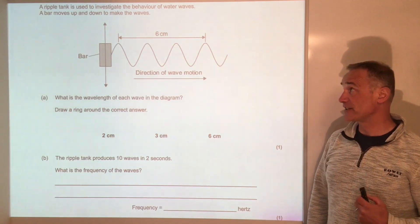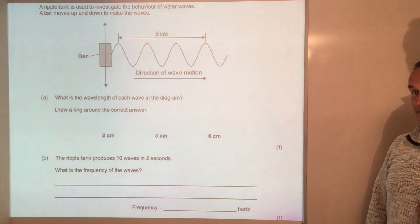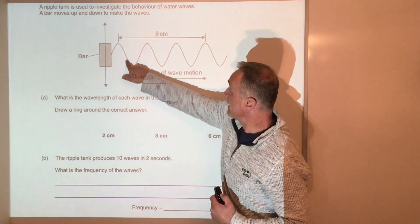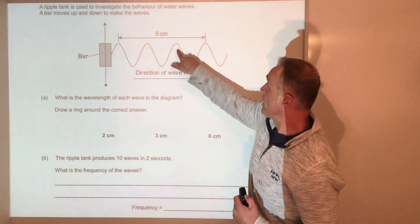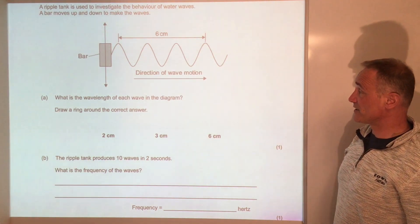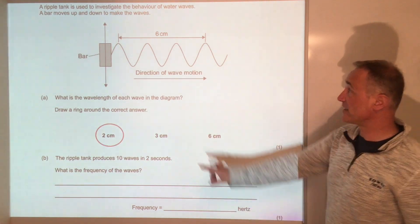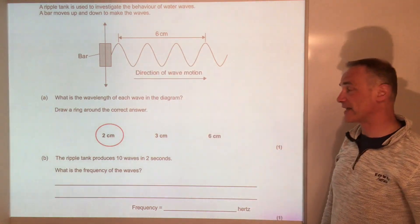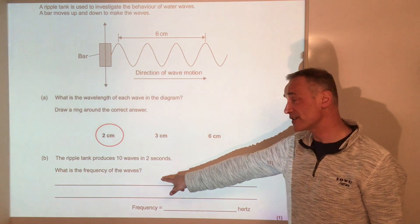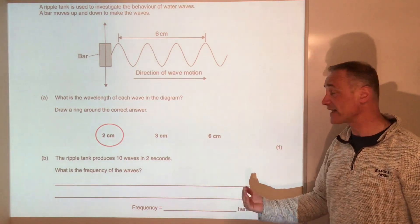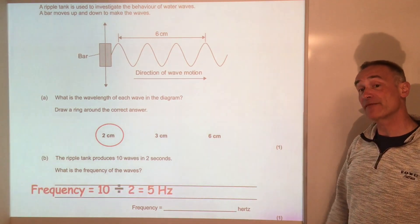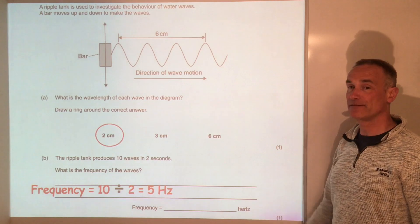Pause the video and have a go at this question. It's key to count these: one wavelength, two wavelengths, three wavelengths on the diagram in six centimetres. So six divided by three is two centimetres — the distance for each wavelength. The second one is a test of your understanding of frequency. Frequency is the number of waves per second. This is ten in two seconds, so ten divided by two is five — five every second — five hertz.